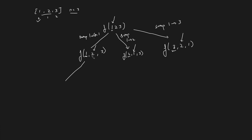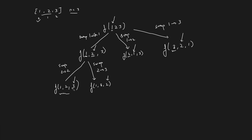For the second position, we look at the first index. We swap two with two so that two stays where it is. Another option is to bring three to the second position by swapping two to three. We then move to the last position. At the last position there is only one possibility, so we swap three with three, ultimately getting one, two, three as a permutation.